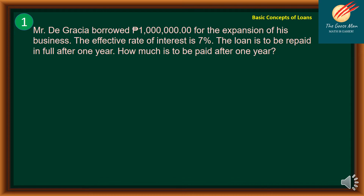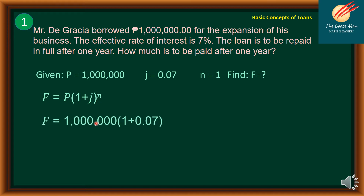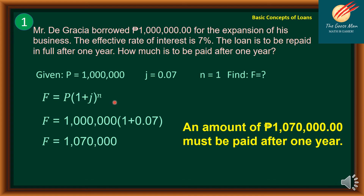Let's have Example 1. Mr. De Gratia borrowed 1,000,000 pesos for the expansion of his business. The effective rate of interest is 7%. The loan is to be repaid in full after one year. The present value is 1,000,000, rate is 0.07, and n = 1. Using the formula FV = PV × (1 + r)^n, we get 1,000,000 × (1.07)^1 = 1,070,000 pesos. Therefore, 1,070,000 pesos must be paid after one year.